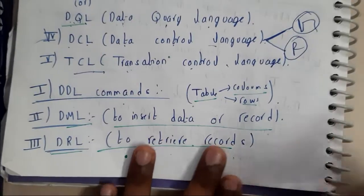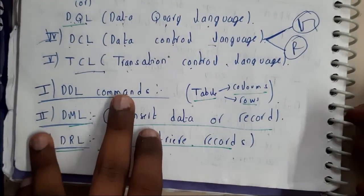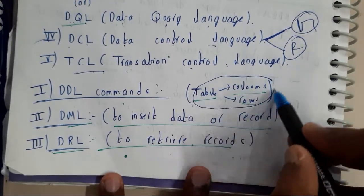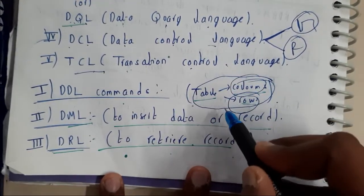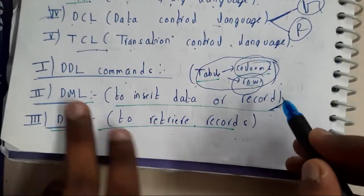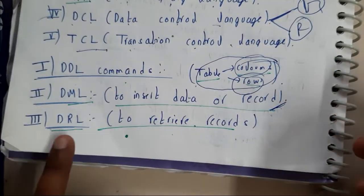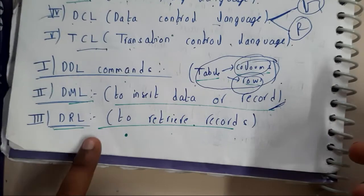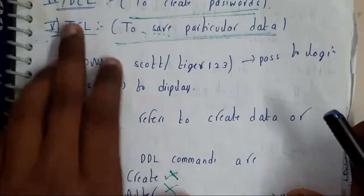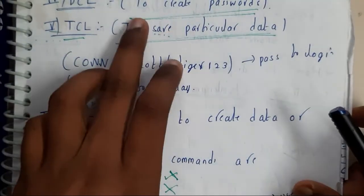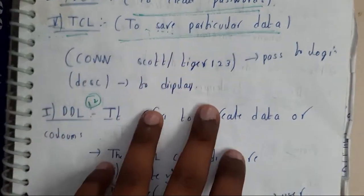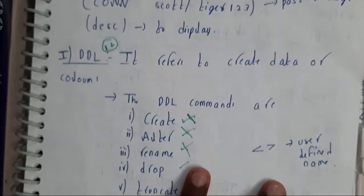Now let us go through a one-line introduction for each. DDL commands are used to create tables with particular rows and columns. DML commands are used to insert records. DRL is used for retrieving data from the records. DCL is used to control or to create passwords. TCL is used to save particular data.